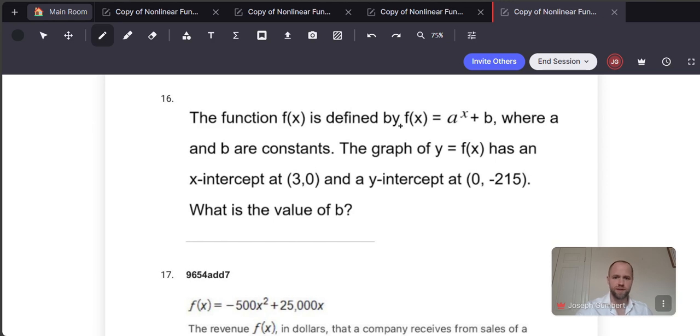The function f of x is defined by f of x equal to a to the x plus b, where a and b are constants. The graph of y equals f of x has an x-intercept at 3,0 and a y-intercept at 0, negative 215. What is the value of b?